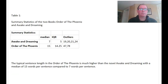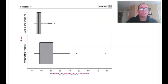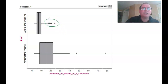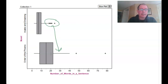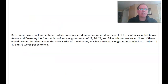The box plot identified that Awakened Dreaming has four outliers, and Order of the Phoenix has two outliers. Something interesting: all of the outliers in Awakened Dreaming would not have been considered outliers in Order of the Phoenix. My example sentence: 'Both books have very long sentences which are considered outliers. Awakened Dreaming has four outliers — 19, 20, 21, and 24 words per sentence. None of these would be considered outliers in Order of the Phoenix, which has two very long sentences that are outliers — 47 and 78 words per sentence.'